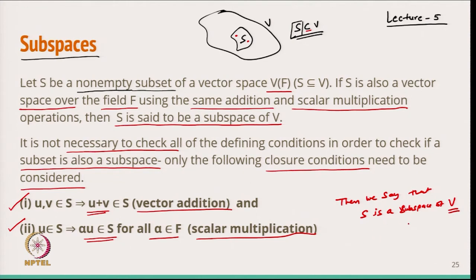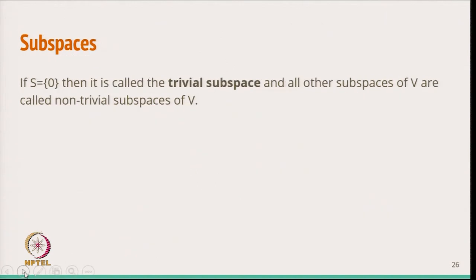If these two properties are satisfied then we say that S is a subspace of vector space V under the same operations. Now let us start with the simplest subspace. If S equals the zero element, this is called the trivial subspace, and all other subspaces of V are called non-trivial subspaces of V.